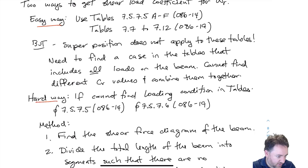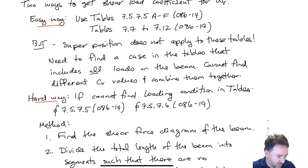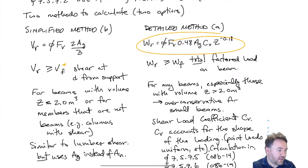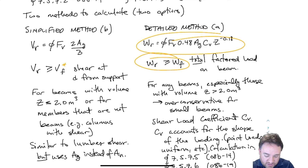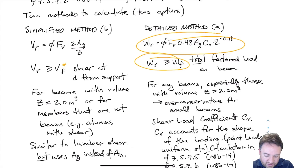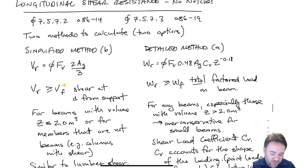Once I have my CV — calculated this way or by using the tables, which is by far the easier way — I come back to the equation for WR, substitute my CV, and get my WR. Then I compare WR to WF, the total factored load on the beam, making sure that the total factored load resistance is greater than the total factored load applied. That's how I do my longitudinal shear resistance check for glulam.